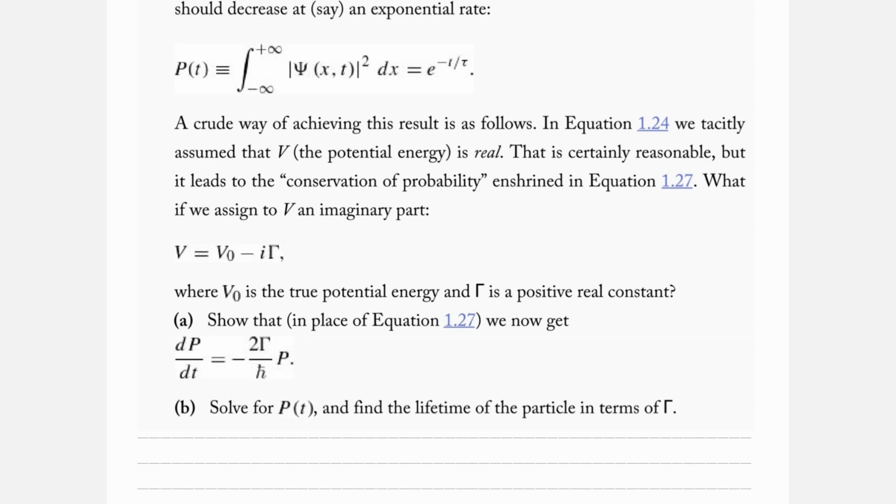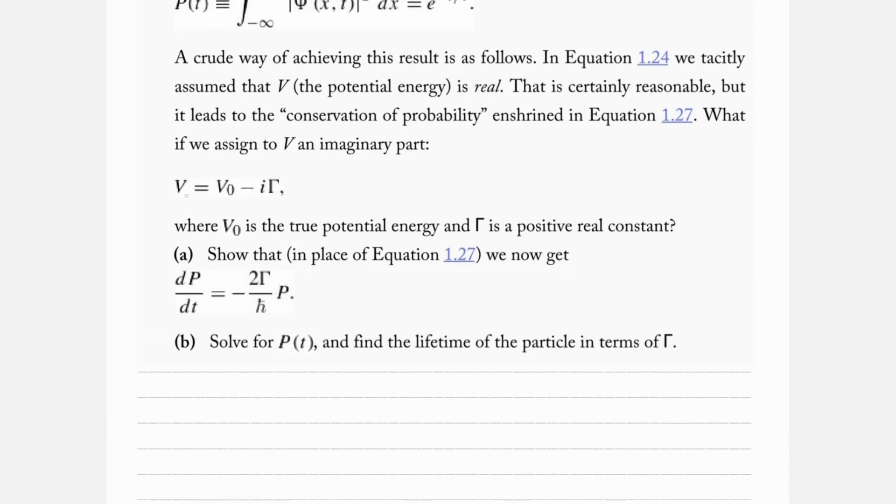One way that we can think about this: if you go to the book, equation 1.24 assumes that V is real, but even though this leads to conservation of probability, we could assign an imaginary part. So V equals V₀, what we had before, minus i times this capital gamma. Gamma is a positive real constant, so we multiply a positive real constant by i.